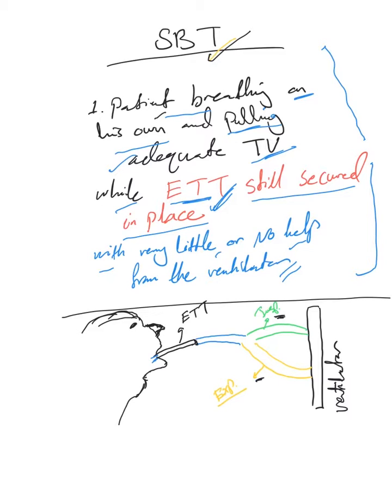So the idea now: we want really to switch off all the support from the ventilator and see if the patient is able to breathe, or minimize the support. One way to do this is basically by disconnecting the patient from the ventilator while the ET tube is still secured in place.